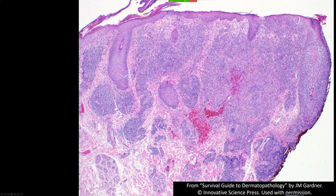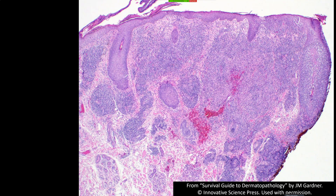Here's a case showing variation — dense infiltrate in the dermis, plus infiltration around eccrine coils, a Pautrier micro-abscess, and look at this hair follicle: it's completely expanded by lymphocytes, with what looks like Pautrier micro-abscesses and tagging in the follicular epithelium. This is called folliculotropic mycosis fungoides. Some patients have involvement only in the follicles without epidermal involvement; sometimes you have both as in this case. This form can be harder to treat and may have a more aggressive clinical course — partly because it's deeper, so topical treatments have difficulty reaching the follicles.